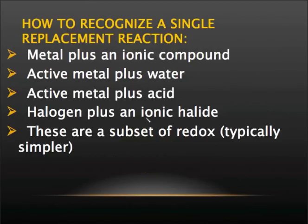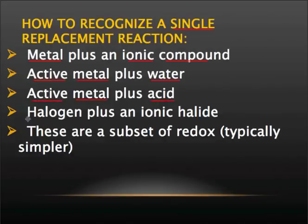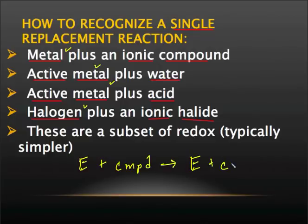Let's look at how we are going to recognize single replacement reactions first — that's an important aspect. How do we recognize it's a single replacement as opposed to a double replacement? We would have a metal plus an ionic compound. We're going to have an active metal and water (which is a compound), an active metal plus acid (which is a compound), and a halogen plus an ionic halide. If you look at each one of these, we have element plus element, element plus element — so an element plus a compound leading to a new element plus a different compound.